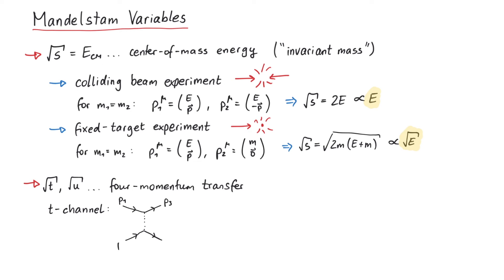Now, since t is defined to be the difference in p1 and p3 squared, this is exactly the momentum that was transferred from top to bottom via the intermediate momentum k.